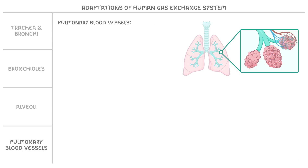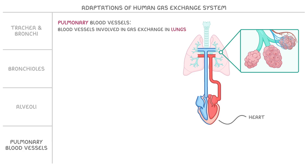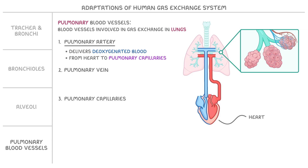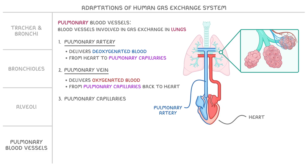To finish up, let's look at the pulmonary blood vessels, which are the blood vessels involved in gas exchange in the lungs — the term pulmonary always refers to the lungs. The pulmonary blood vessels include the pulmonary artery, pulmonary vein and pulmonary capillaries. The pulmonary artery delivers deoxygenated blood from the heart to the pulmonary capillaries in the lungs, while the pulmonary vein delivers oxygenated blood from the pulmonary capillaries back to the heart.